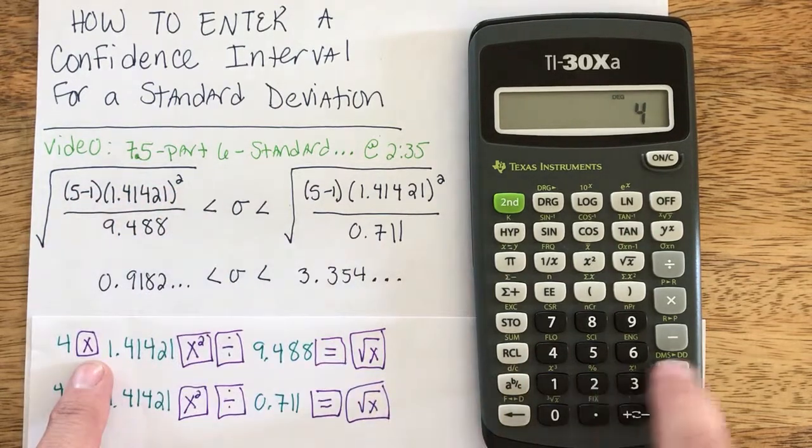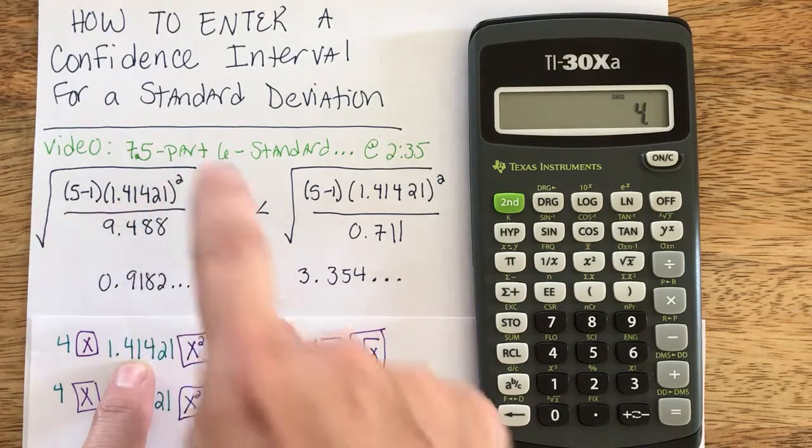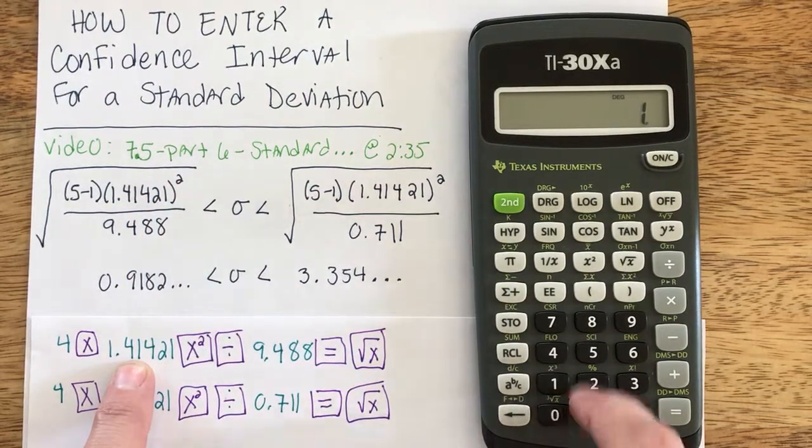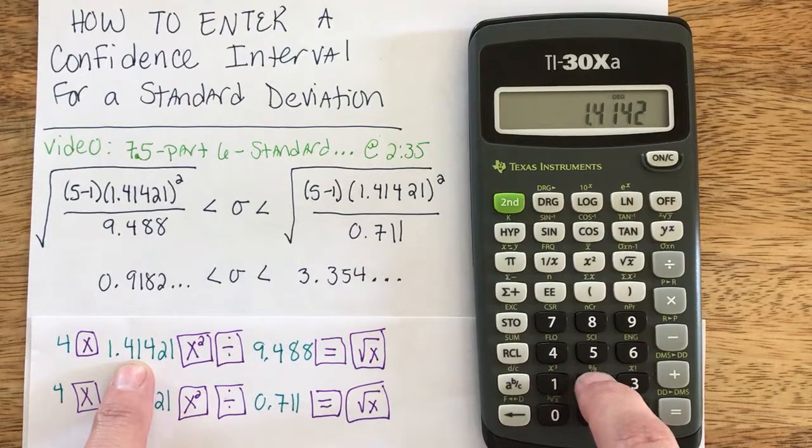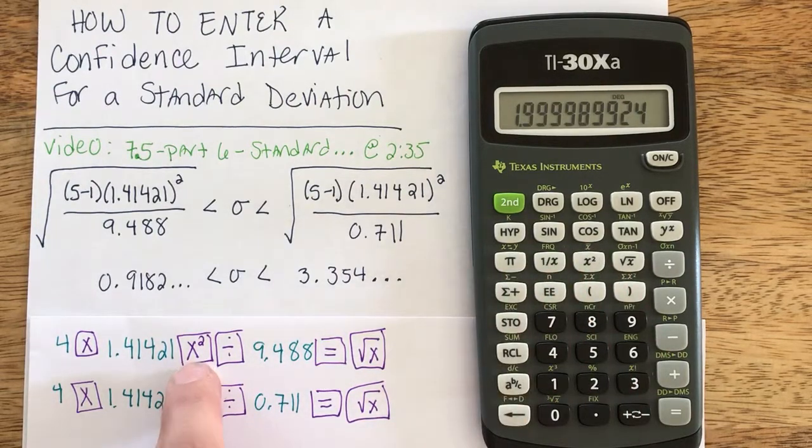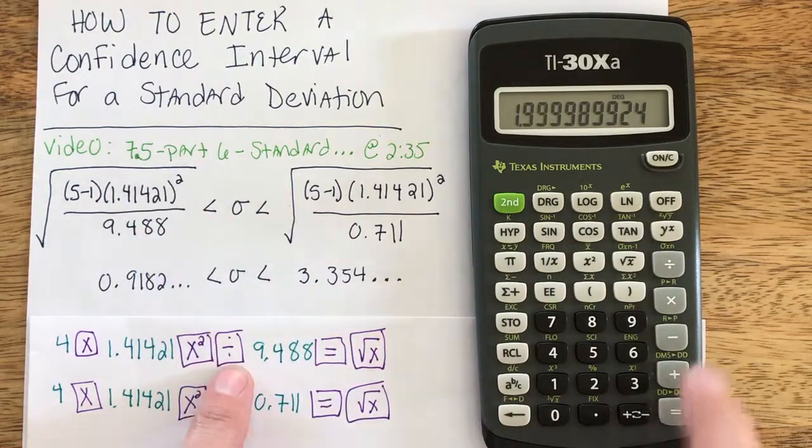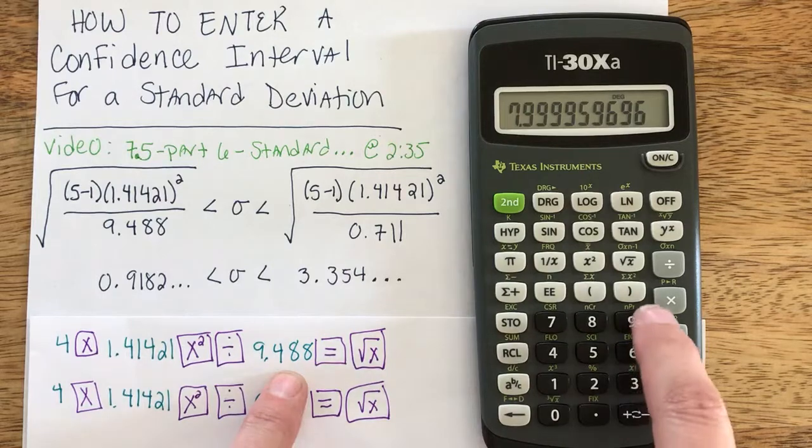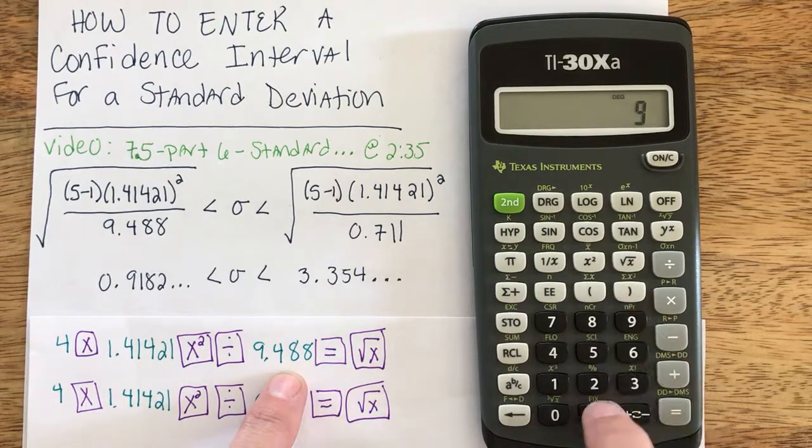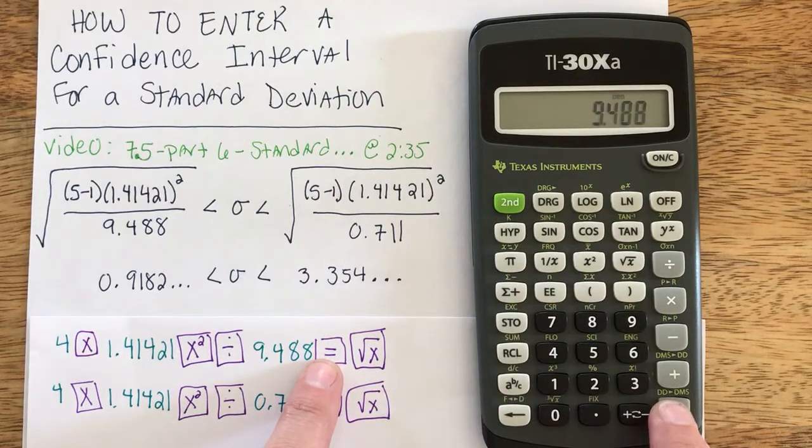Then I need to multiply with the sample standard deviation squared, which is 1.41421. Be sure to hit squared—that's a very common mistake. And the next thing you need to do is just go ahead and stay within the square root, so we can just hit divided by the chi-square table value of 9.488.